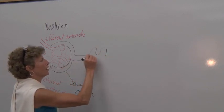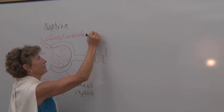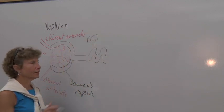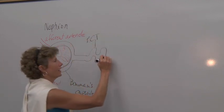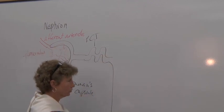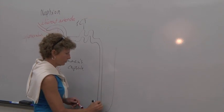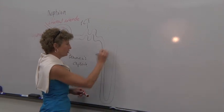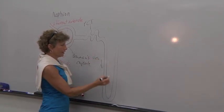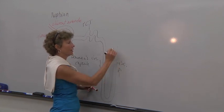First, you have what's called the proximal convoluted tubule — I'm just going to put PCT. It's proximal because it's closest to the glomerulus. Then that's going to break up and go down deep into the medulla of the kidney in what's known as the loop of Henle. You have a descending loop of Henle going down, and you have an ascending loop of Henle coming back up.